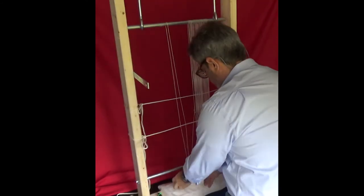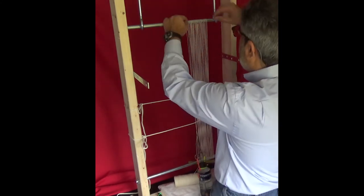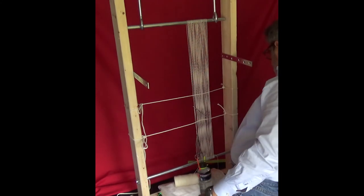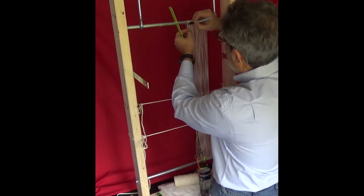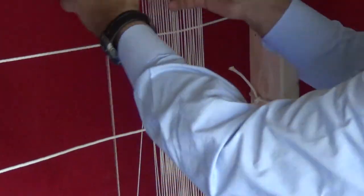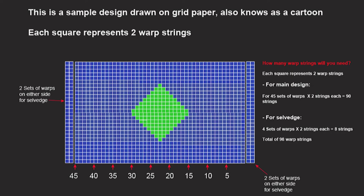Your design will determine how many warp strings you will need. We need to add two pairs of warp strings extra on each side to build the salvage. If your pattern requires 45 warps, then add four more pairs for the salvage. That is two pairs on each side.